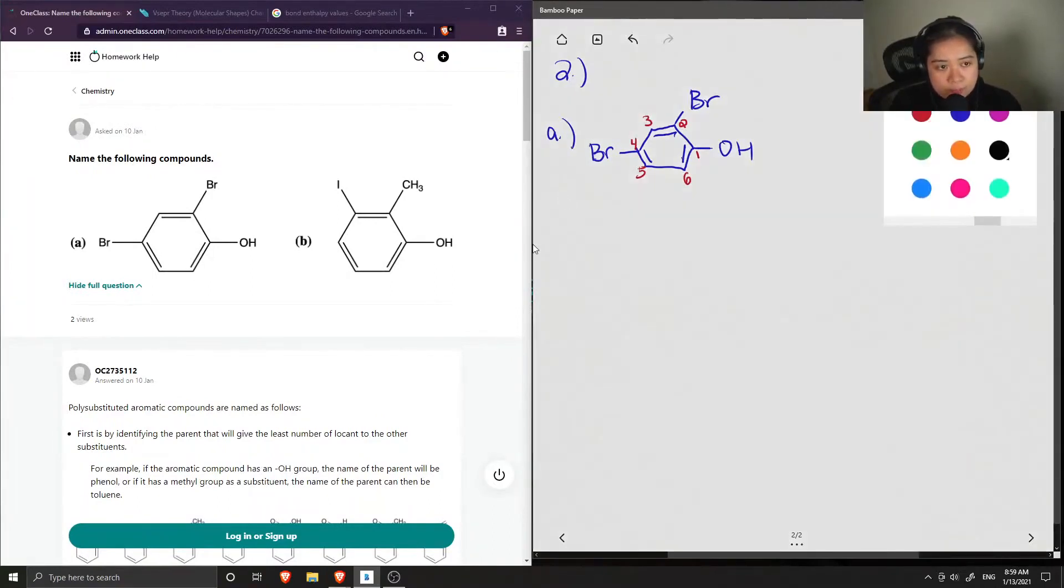So now that we numbered our benzene ring, we can start to name it. So first we're going to specify which carbons the bromine atoms are on. So on carbon 2 and carbon 4, we have two bromines.